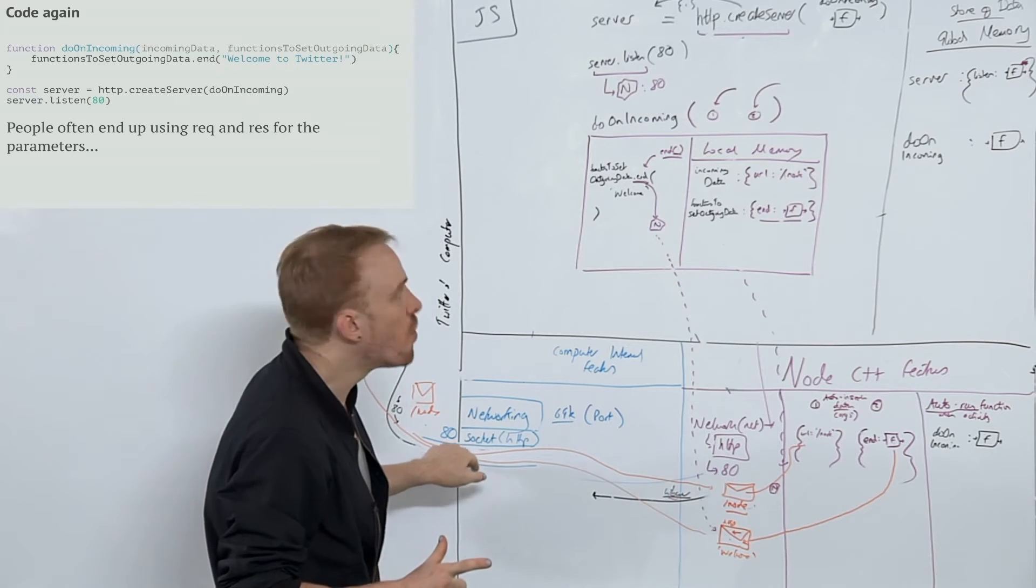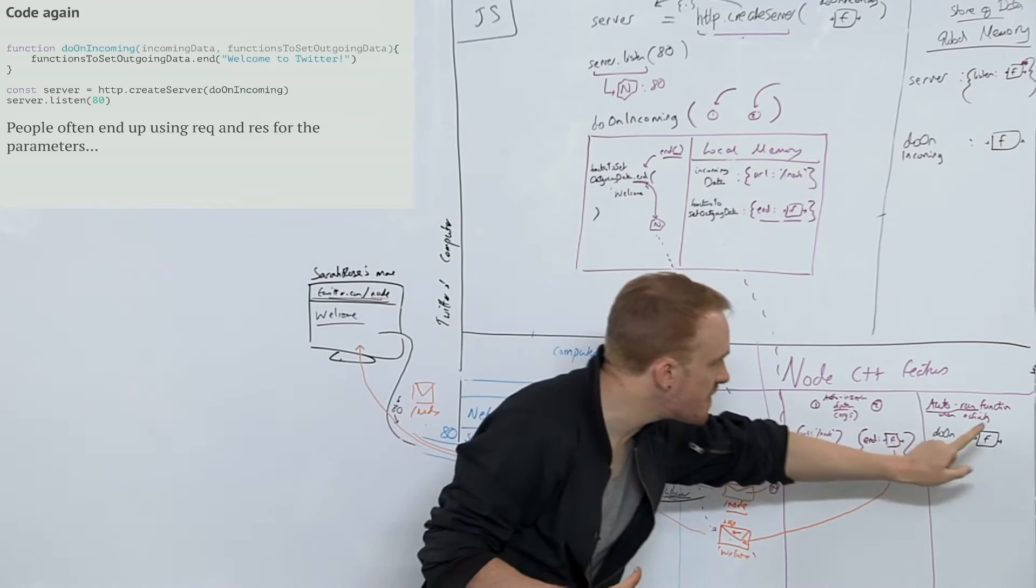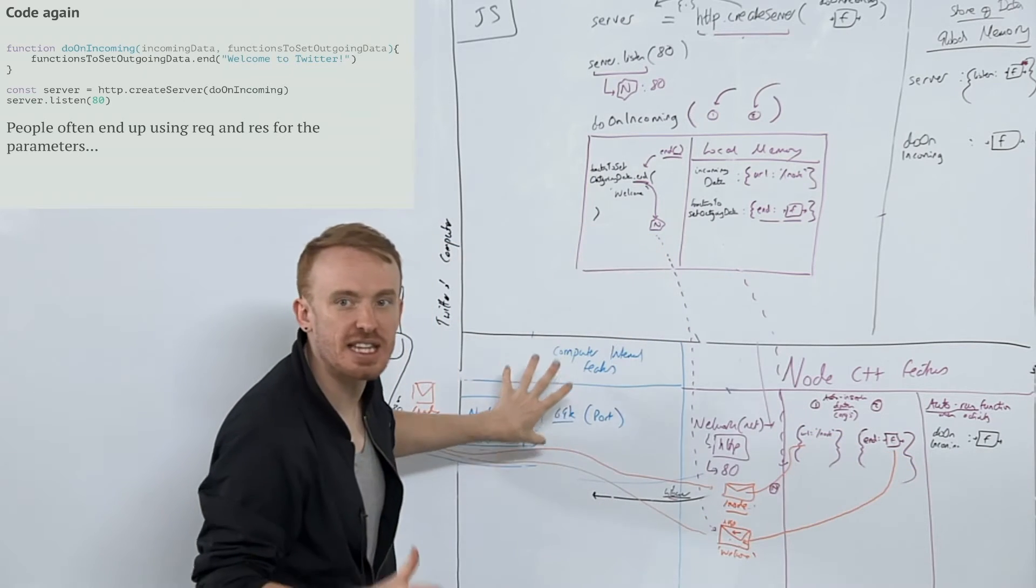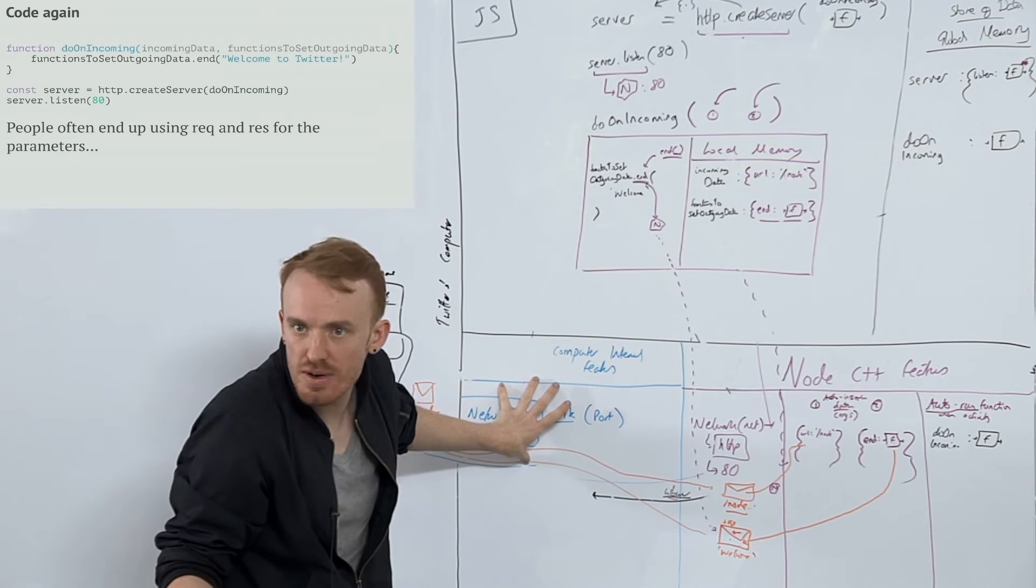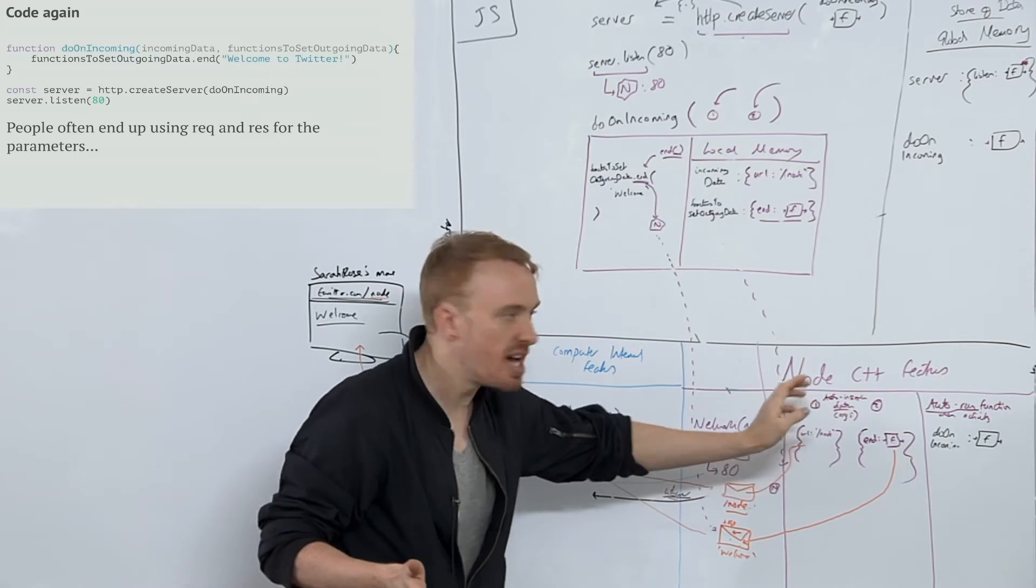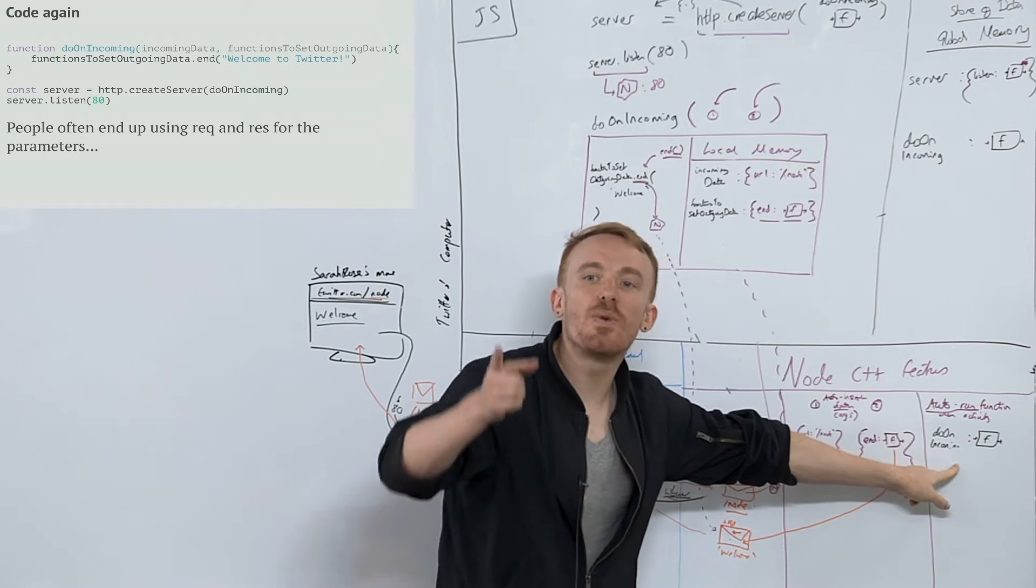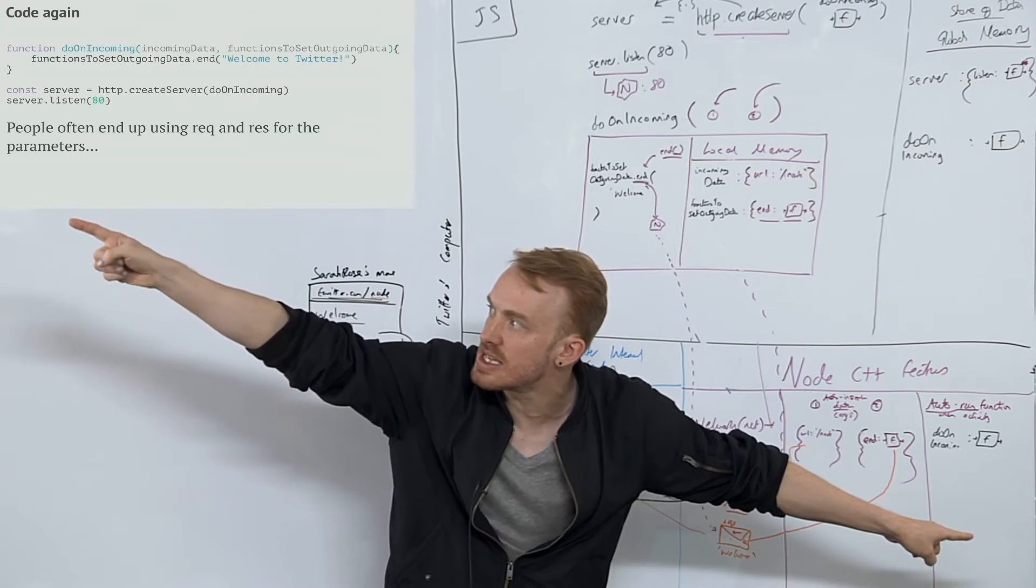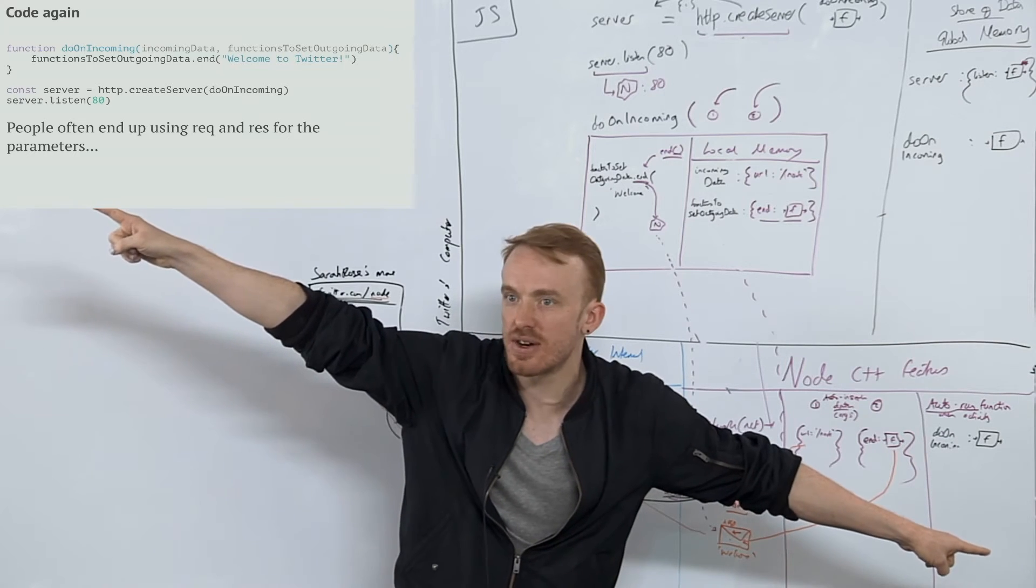Every time we're going to use a built-in label that sets up the Node C++ feature that has access to the background feature, we're going to need to add a function that Node will auto-run whenever the background feature gets activity, or if we're getting a file, for example, when the file gets into Node out of the file system, out of the computer's internals, a function that will auto-run.